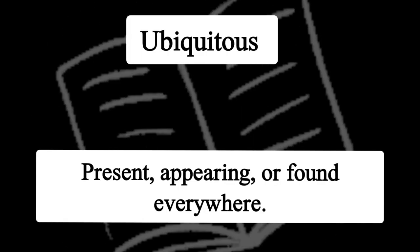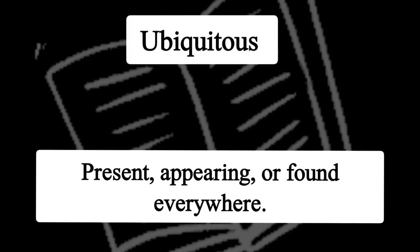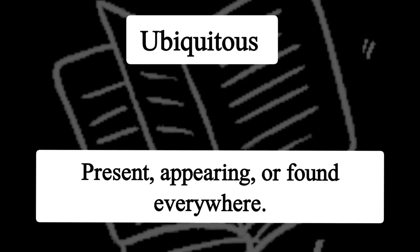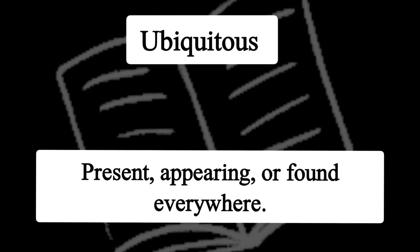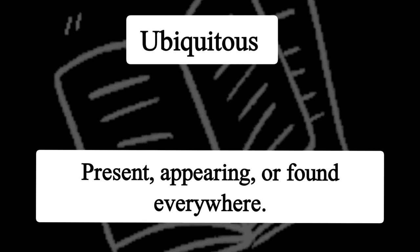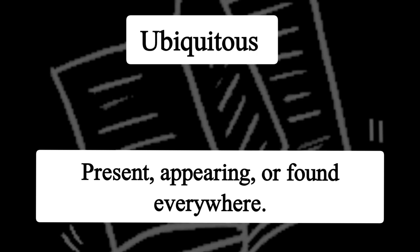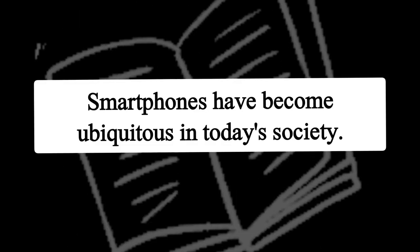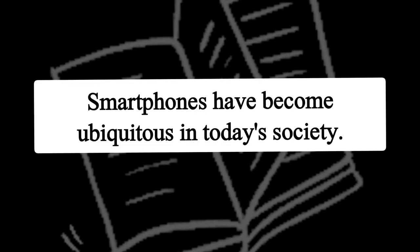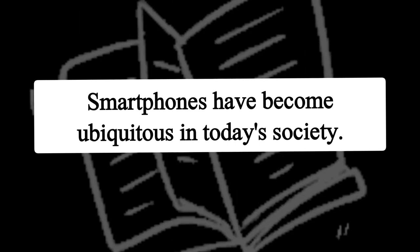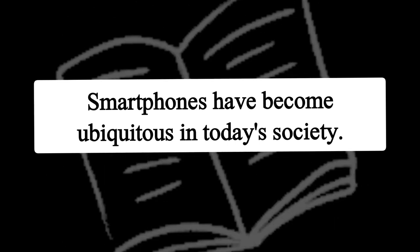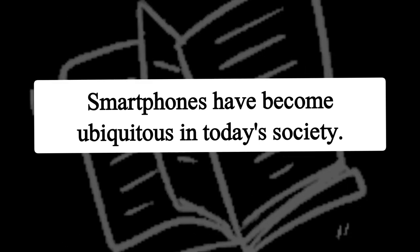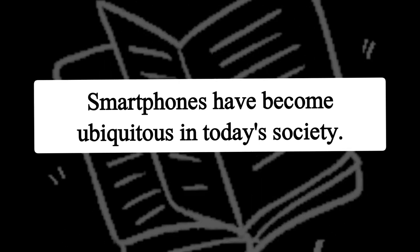Pahla word hai ubiquitous. Aur iska matlab hai koi aisi chiz joh sab jagah mil rahi hai — present, appearing or found everywhere. For example, smartphones ubiquitous ho gai hai aaj ki society mein. Smartphones have become ubiquitous in today's society.